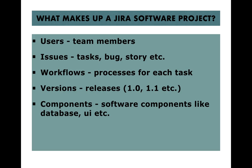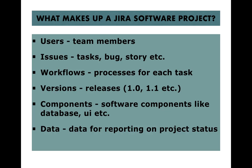Then come components. In software development you have different components like database, UI, and middleware — those different segregations within the software make up the Jira project's components. Finally, there is the data used for reporting on project status. When you create a user story or bug, you input values for those issues, and that stored data is used for reporting the project status. These are the key components that make up a Jira Software project.